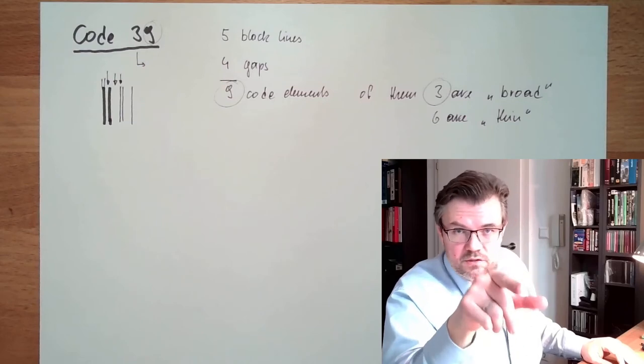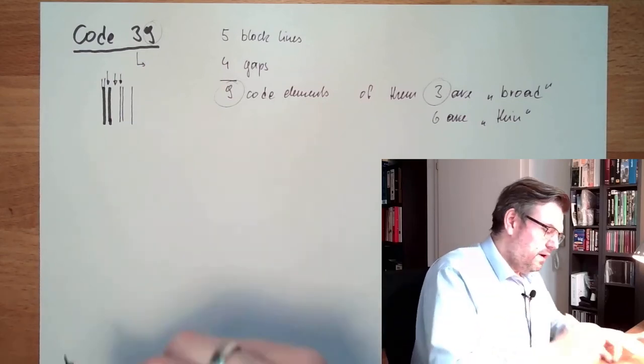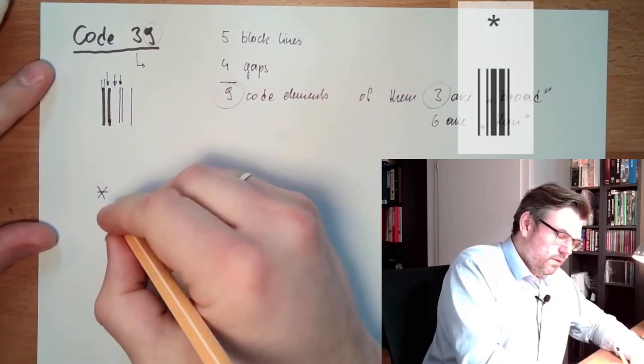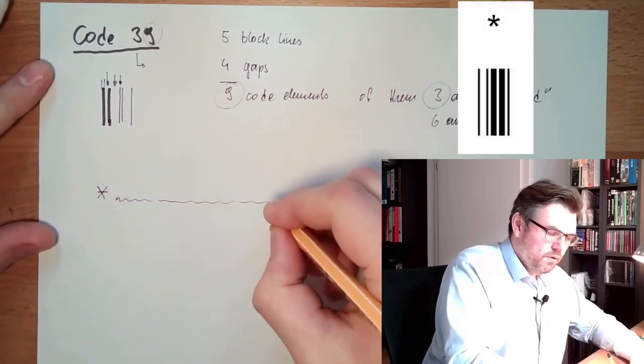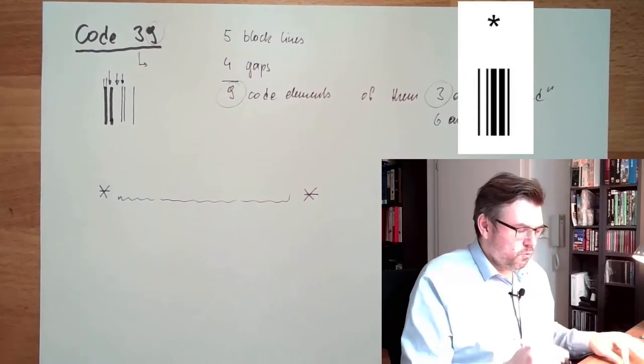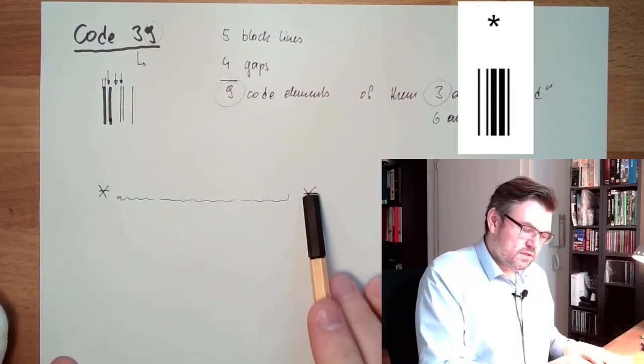There's also a start and stop sign. The start and stop sign is always the star. Then there's the data, whatever you want to write, and then there is the star again at the end.